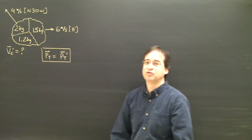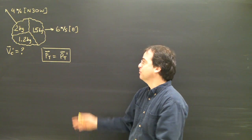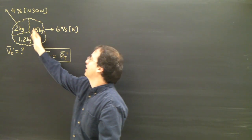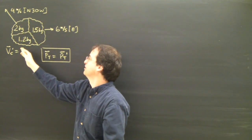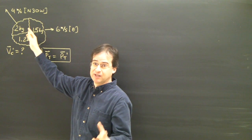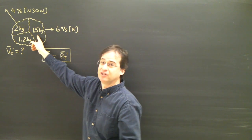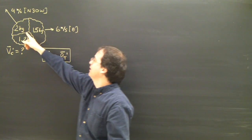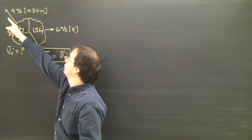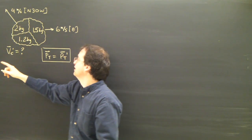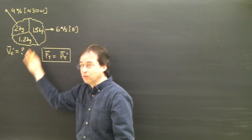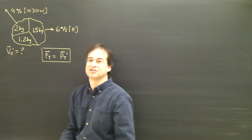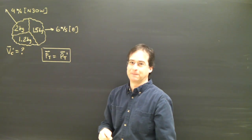What we're going to do now is a two-dimensional momentum problem. In this one, it's an explosion. I've got an object and it breaks up into three pieces: a 1.5 kilogram piece going to the right, a 2 kilogram piece going north 30 degrees west, and a 1.2 kilogram piece going some direction. I want to know how fast it's going and in what direction.